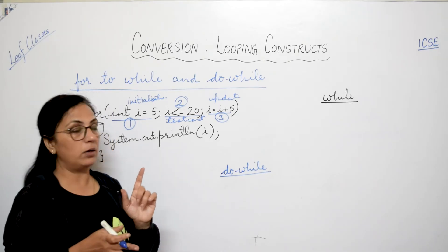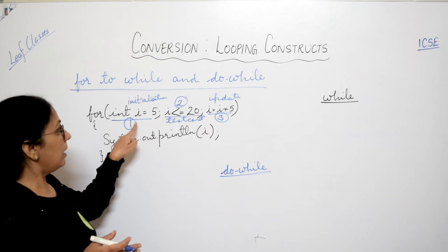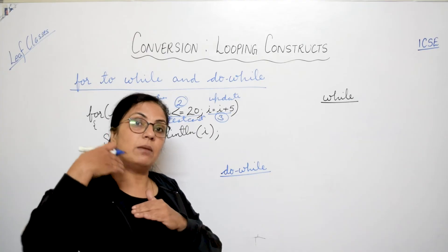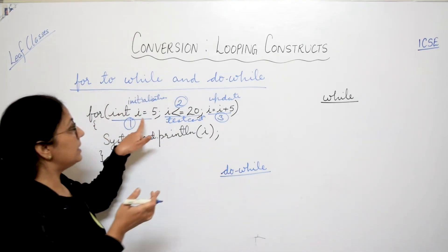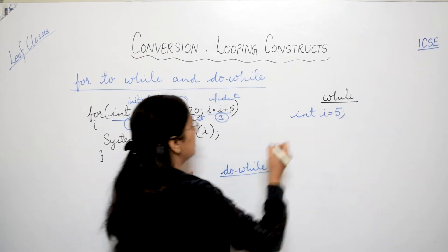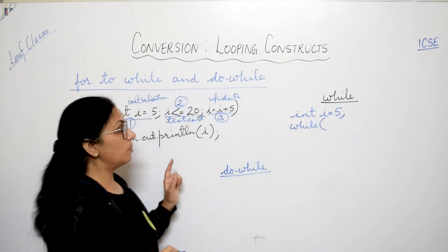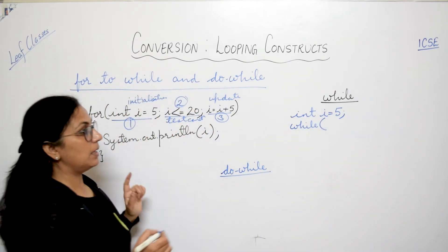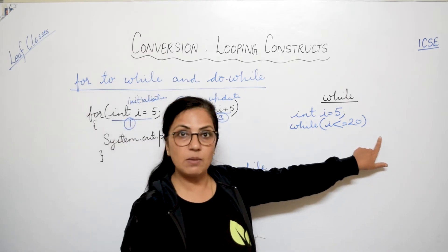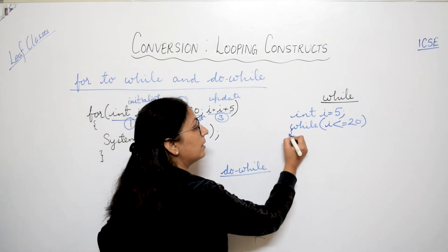Now we have to convert it to while. When we have to convert it to while, so initialization is done before the body of the loop. So int i equals to 5, this you will write before starting the loop only, you will write like this. Then while ke saath you will write the condition. While ke saath bracket mein condition likhoghe. Condition kya hai? i less than equals to 20. i less than equals to 20. This is the condition. Please don't put any semicolon over here. Many children after a while they put the semicolon here. And then you start the body of the loop.